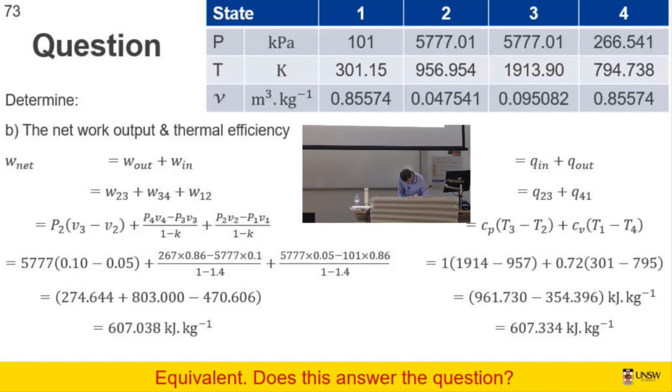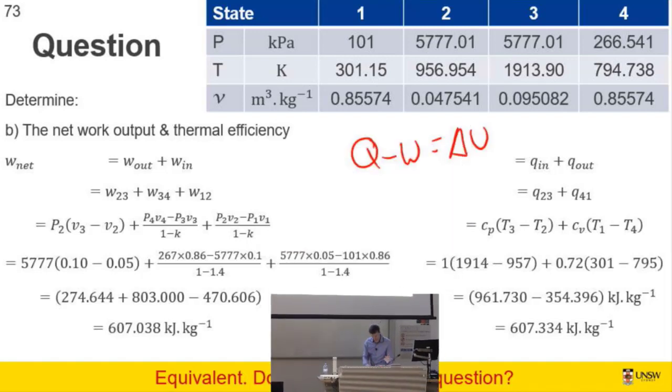We've seen that before for a closed process. We've got the P's and the V's and we know K. So all of that comes out to be 607 kilojoules per kilogram. Because for a closed system, Q minus W equals delta U, and because for a closed cycle, the cyclic integral, so after you've done the whole cycle once, the cyclic integral of any property must be equal to zero. And this is where you have to pay attention to what your simplifications are and when it's appropriate to use them.